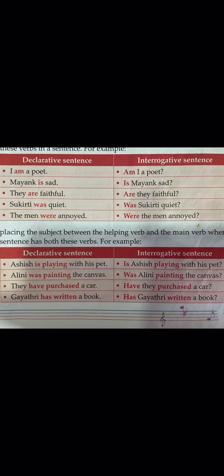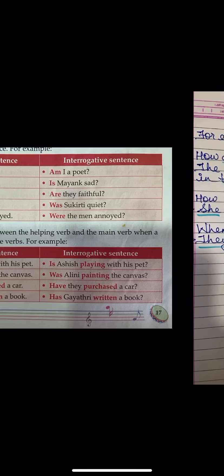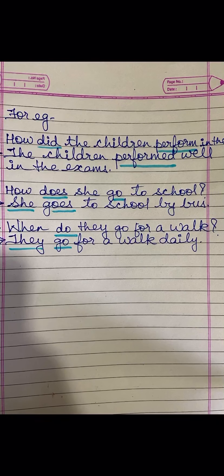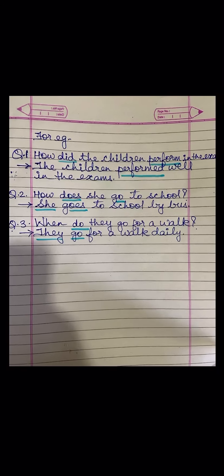Now let's see how to form WH questions with the special words DO, DOES, and DID. First sentence: 'The children performed well in the exams.' This sentence is past tense — you can see 'performed' has ED. So you will use DID because there is only a main verb here. Since you want to know about manner, you use HOW. It becomes: 'How did the children perform in the exam?' When using DID, use the base form — 'performed' changes to 'perform' by removing ED.